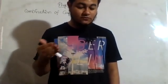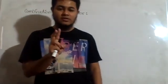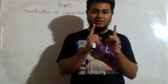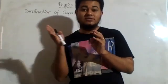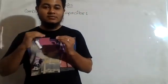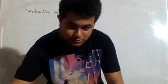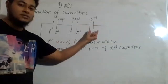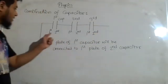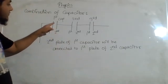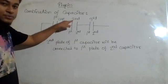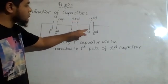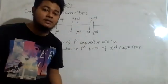So, series combination of capacitors: that combination in which the second plate of the first capacitor is connected to the first plate of the second capacitor. Then the second plate of the second capacitor is connected to the first plate of the third capacitor. This is the first capacitor, this is the second capacitor, this is the third capacitor, and every capacitor will have two plates — first plate and second plate. If I connect them in such a way, then it will be called series combination.